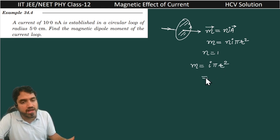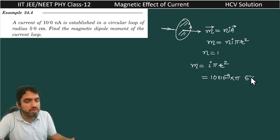What is value of i? That is equal to 10 nano ampere, so 10 into 10 raise to power minus 9 ampere. Pi as it is and this radius is 5 centimeter, so 5 into 10 raise to power minus 2.